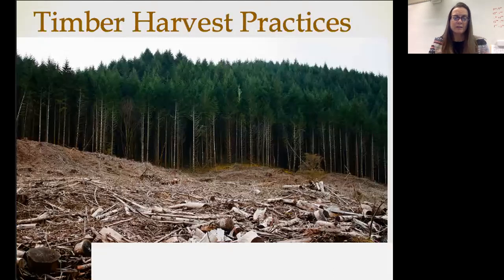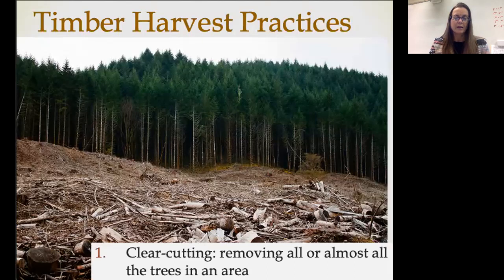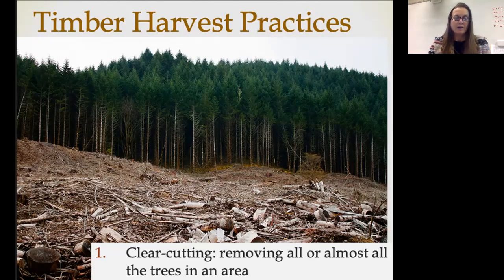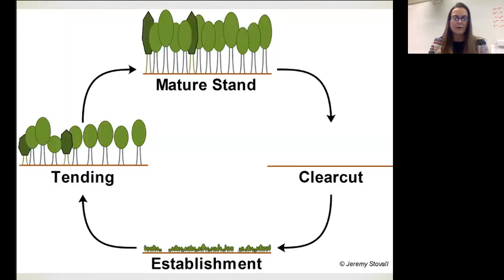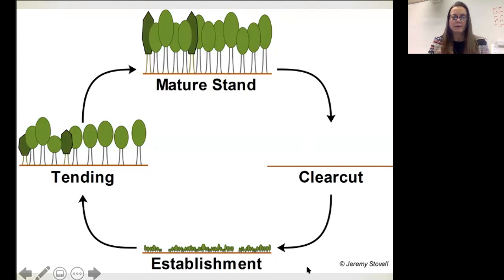Let's talk about some of the different timber harvest practices. The first one is the one we're probably all most familiar with, and that's clear cutting. When we do clear cutting, that means you cut almost all or all of the trees in a particular area, leaving behind brush and scrub and some unusable portions, but basically taking down everything. Once you clear cut, then we have secondary succession — the establishment of a new set of trees — which are tended, and then once they reach maturity, they're clear cut again.